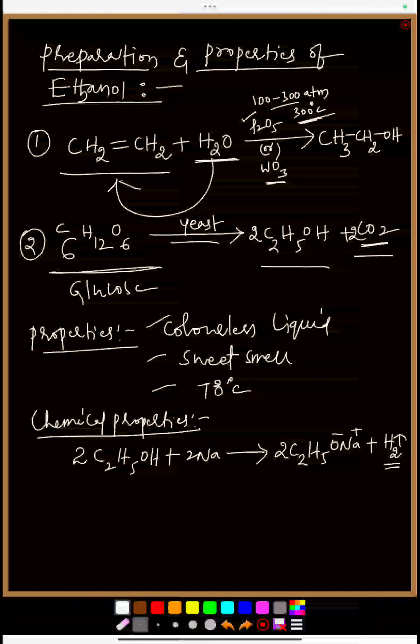Which gives hydrogen gas outside. The products are C₂H₅ONa (sodium ethoxide) and hydrogen gas. It means ethyl alcohol reacts with sodium metal and gives us sodium ethoxide and hydrogen gas out. In your examination there will be a question: if ethyl alcohol reacts with sodium metal which gas releases out? The answer is hydrogen gas.